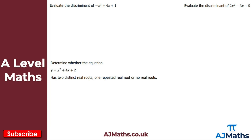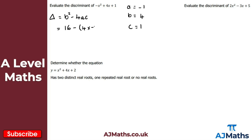For the first practice question, evaluating the discriminant of minus x squared plus 4x plus 1: a equals minus 1, b equals 4, c equals 1. Delta equals 4 squared minus 4 times minus 1 times 1, giving 16 minus minus 4, which equals 16 plus 4 equals 20.